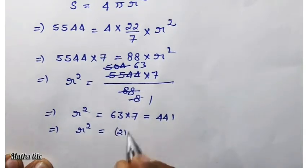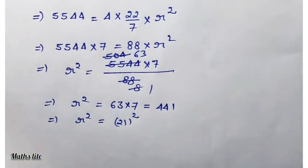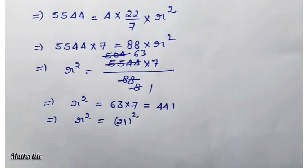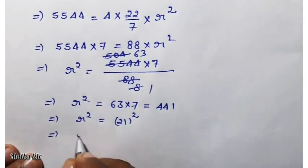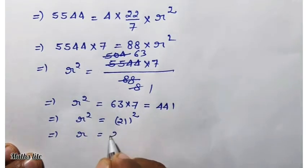21 whole square. 441 is the square of 21. Implies that R equals 21 centimeter.